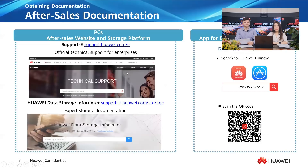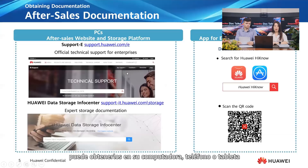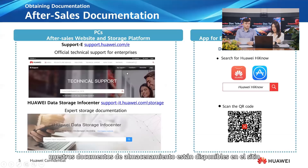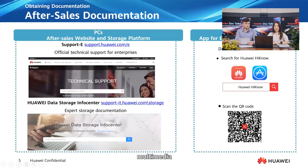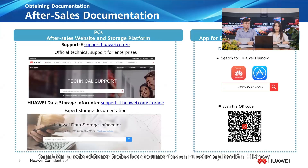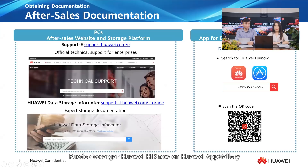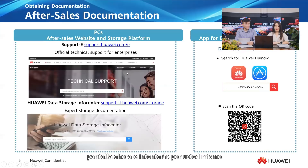For after-sales documents, you can obtain them on your computer, phone, and tablet. If you are using a computer, our storage documents are available on both the Huawei Technical Support website, or Supporte website for short, and the Huawei Data Storage Info Center — a platform that integrates all storage documents, online tools, multimedia, training courses, and dedicated info centers. If you are using your phone, you can get all the documents on our HiNo app. You can download Huawei HiNo on the Huawei App Gallery or any app store available on your phone, or simply scan the QR code on screen now and try it for yourself.